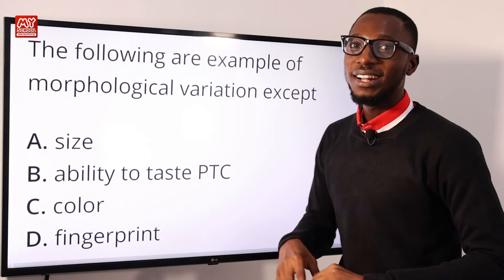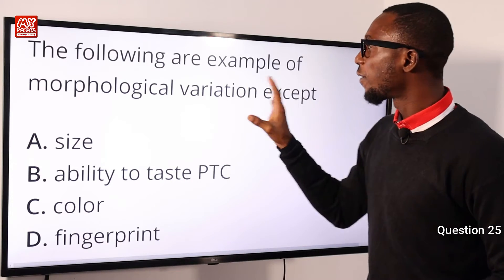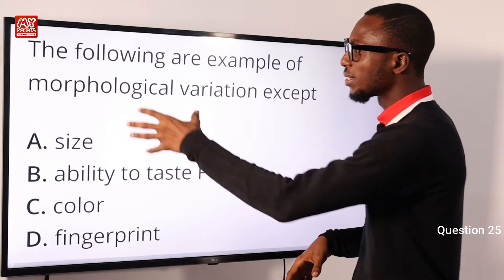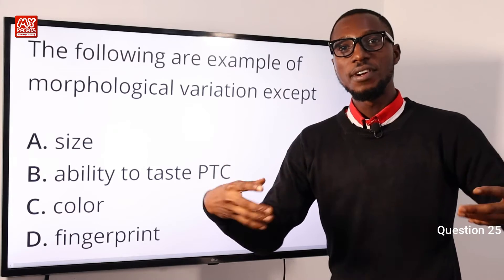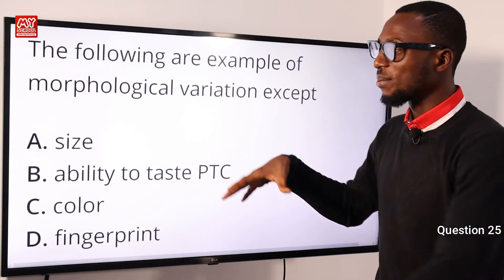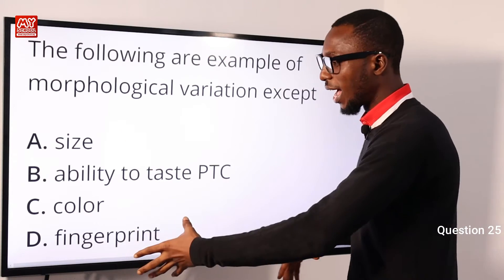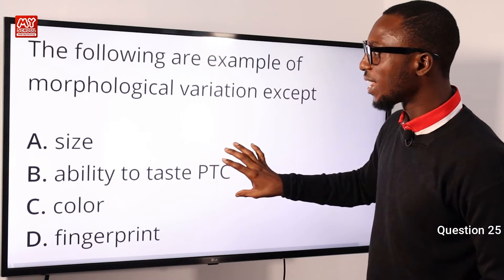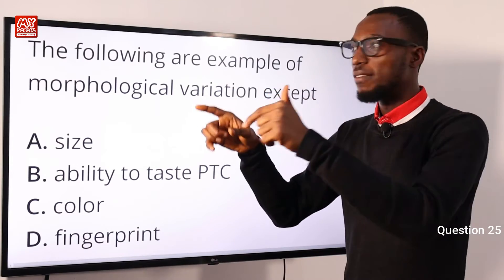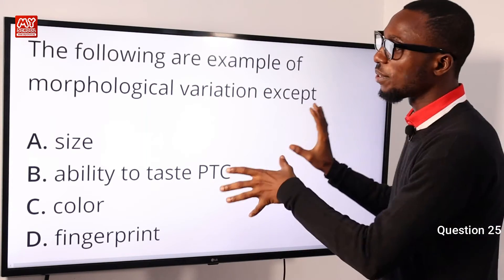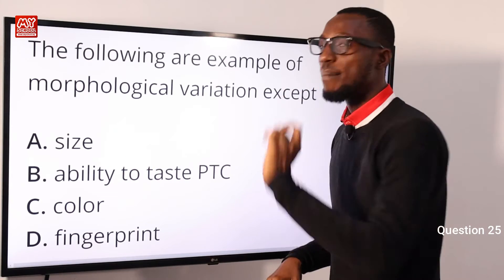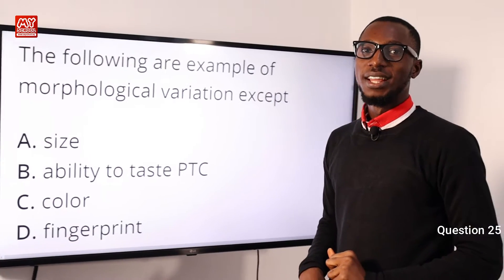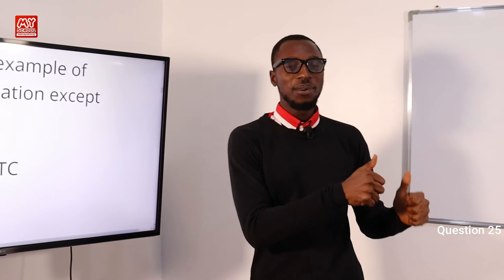Question 25: The following are examples of morphological variation except what? When we talk about morphological variation, we refer to form and structure — including size, color, and fingerprint. The ability to taste PTC belongs to physiological variation. The exception here is option B: ability to taste PTC.